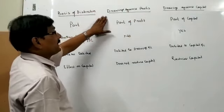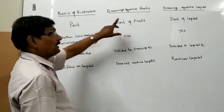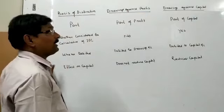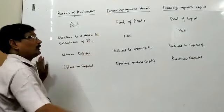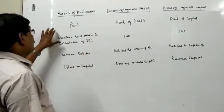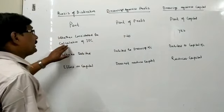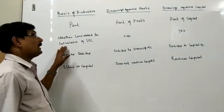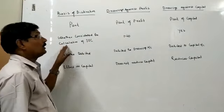The first basis of distinction is 'part': drawings against profit is a part of profit, whereas drawings against capital is a part of capital — it is where we withdraw the capital in total.